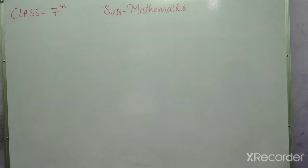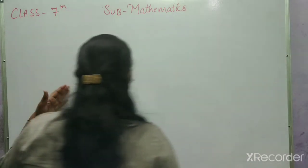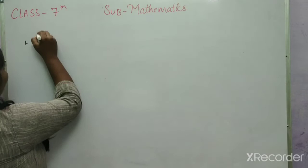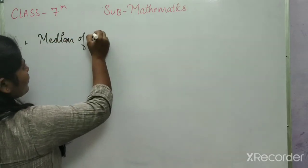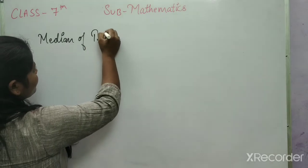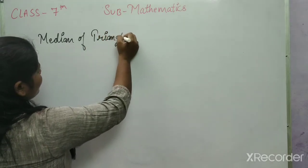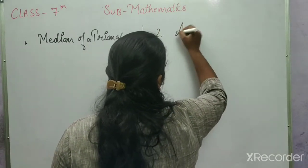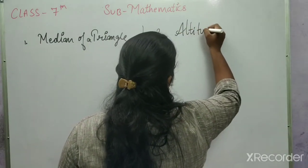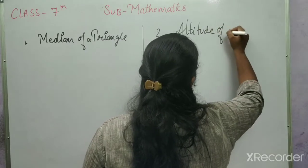Now some related terms of triangle. First is Median of a triangle, and second is Altitude of a triangle.